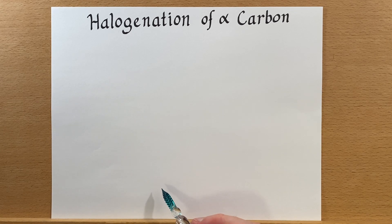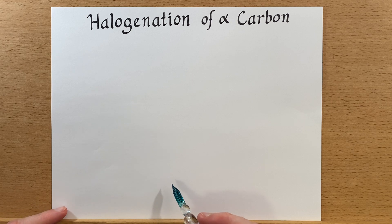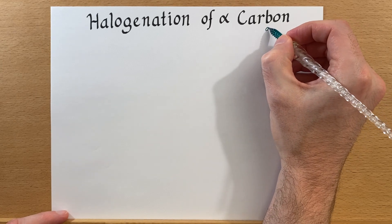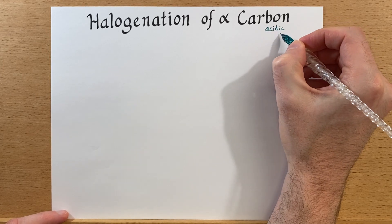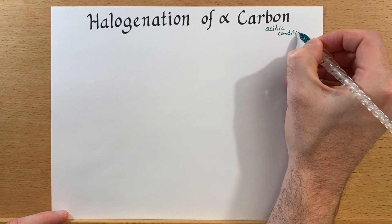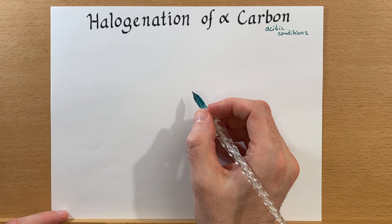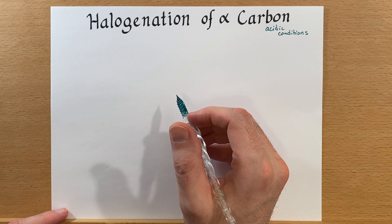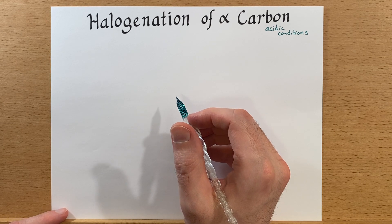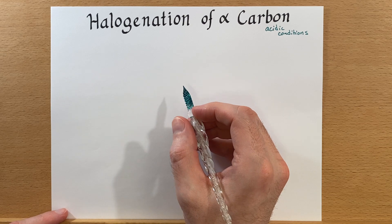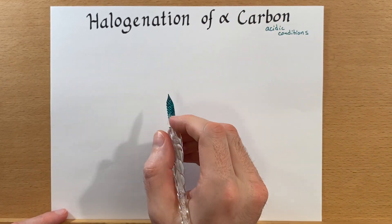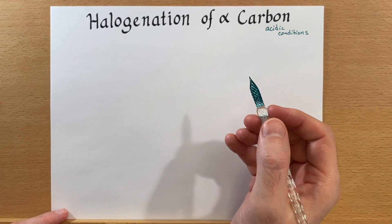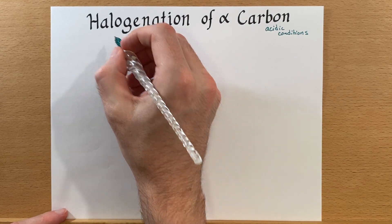We just finished talking about halogenation of alpha carbons under basic conditions. We can also do it under acidic conditions, and we'll get a different result. Under basic conditions, if it's possible to add more than one halogen, it will. But under acidic conditions, it will only add one halogen, even if additional alpha hydrogens on an alpha carbon exist. So, let's examine why.